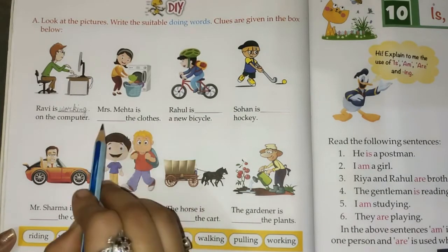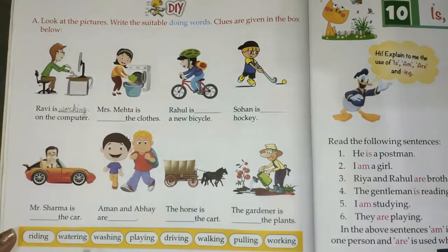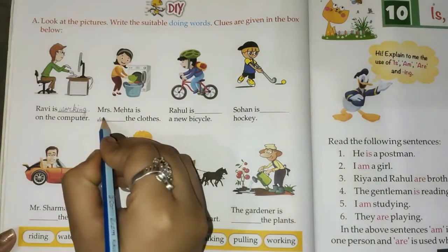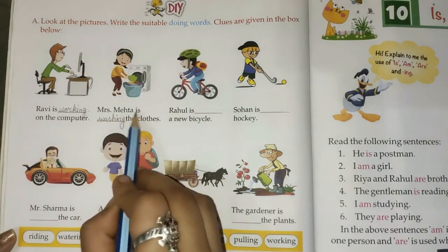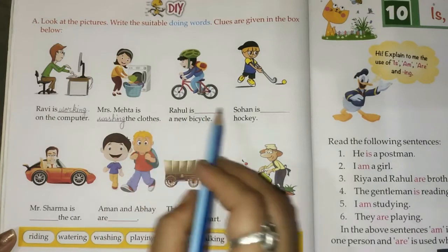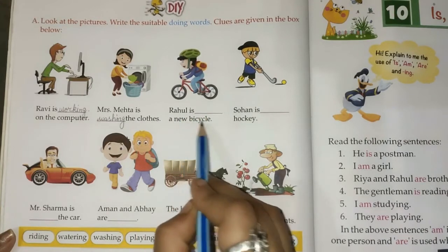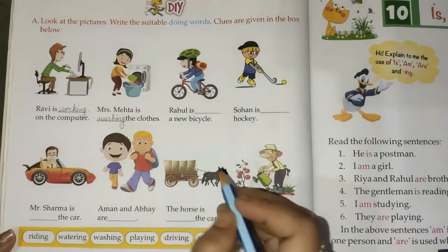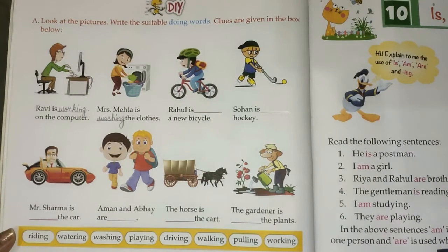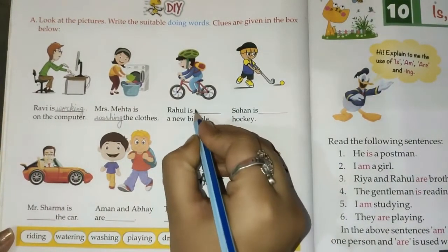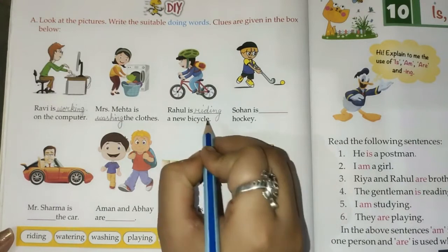Number 2. Mrs. Mehta is — what is she doing? She is washing. So here we will write washing. W-A-S-H-I-N-G. Mrs. Mehta is washing the clothes. Next picture: Rahul is dash a new bicycle. What is Rahul doing? He is riding. R-I-D-I-N-G. Rahul is riding a new bicycle.